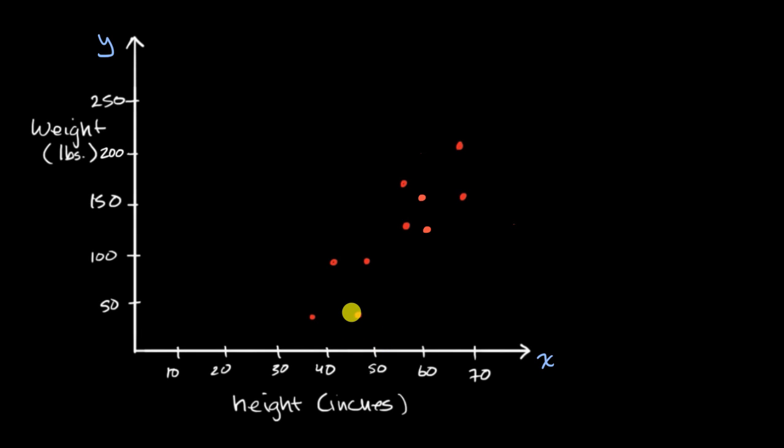And so on this scatterplot here, each dot represents a person. So for example, this dot over here represents a person whose height was 60 inches or five feet tall, so that's the point 60 comma, and whose weight, which we have on the y-axis, was 125 pounds.